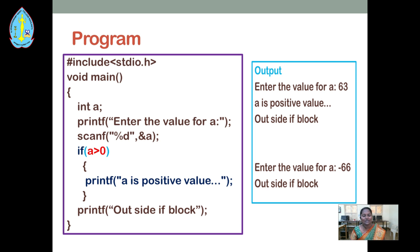Here I have given one simple example for the if statement — to check whether a given number is positive or not. First, we need to include the header file stdio.h. stdio means standard input/output operations. In this program, I am going to use the printf and scanf functions, so we should include stdio.h. After that, we type #include stdio.h and the void main function.